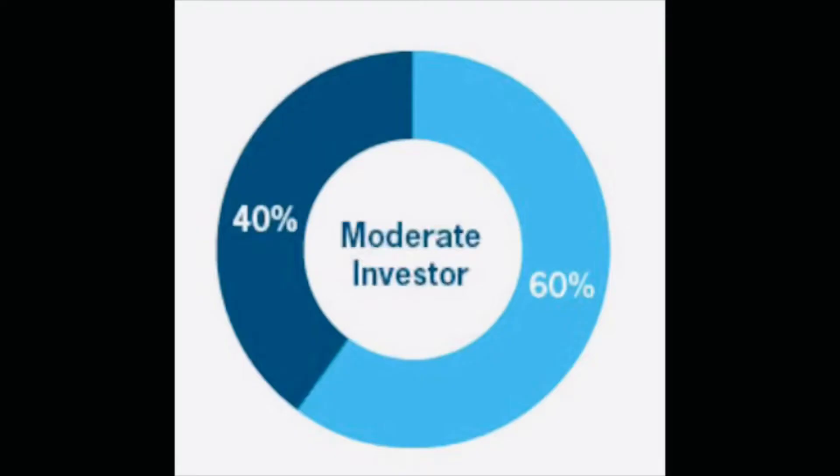The second type is the moderate risk tolerance investor. These investors do accept risk, but not a huge amount. Their approach is a really balanced one — like a 50/50 structure. I am actually a moderate risk tolerance investor myself. These people usually go for large market cap companies, mutual funds, bonds that are relatively riskless, some ETFs, and commodities — something that diversifies and balances the portfolio. Moderate investors typically invest for around five to ten years.